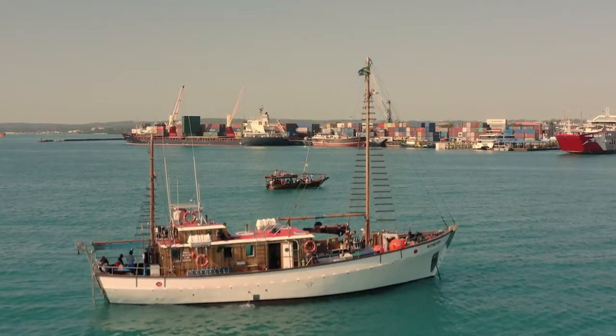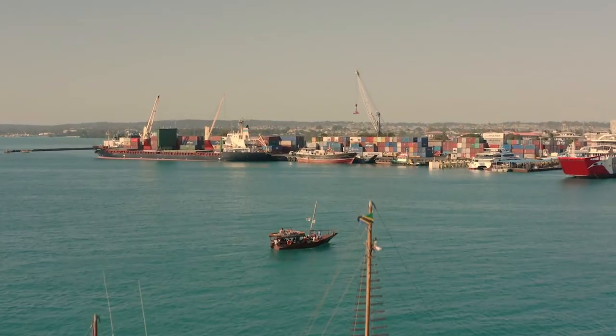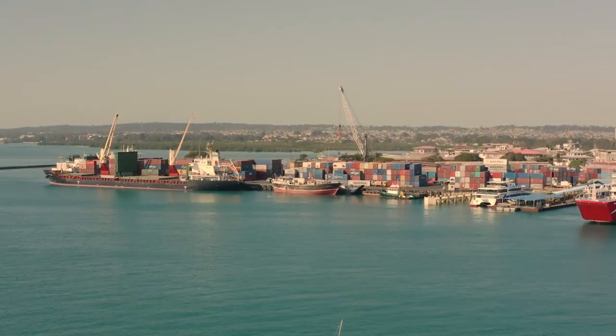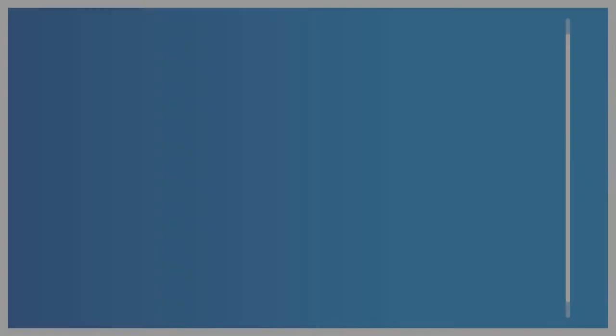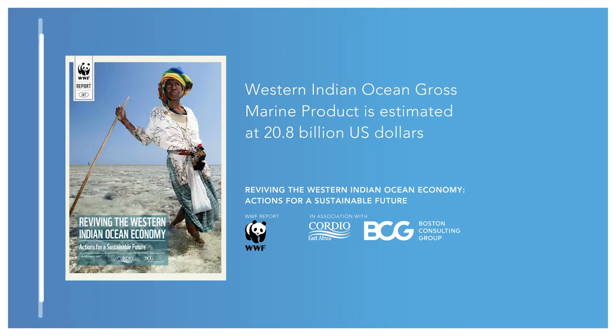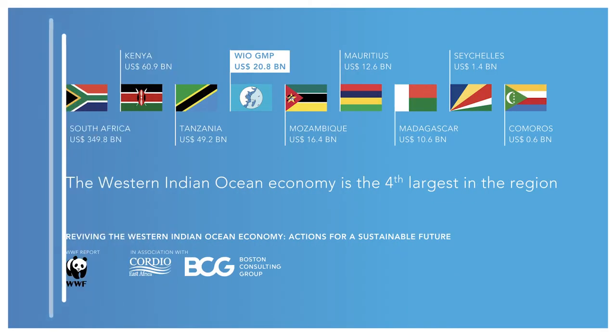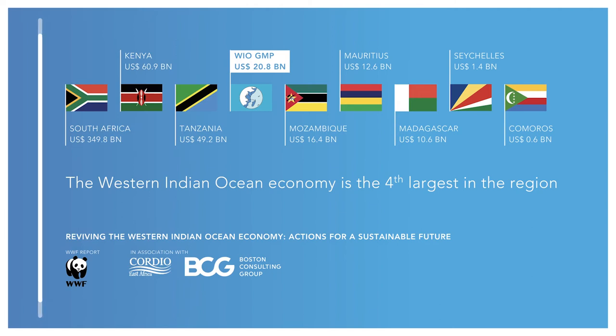The gross marine product allows us to compare ocean output to national economies, in particular to GDP, which measures the total monetary value of goods and services produced by a country in a year. A recent economic analysis led by the WWF estimated the Western Indian Ocean gross marine product at 20.8 billion US dollars annually. It is calculated in a way similar to a calculation of the GDP of a country. If compared to the Western Indian Ocean countries' GDP, the Western Indian Ocean emerges as the fourth largest economy in the region.